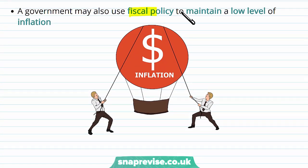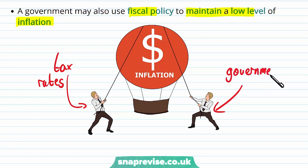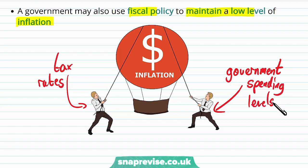The government may also use fiscal policy to maintain a low level of inflation. Suppose that inflation is starting to creep up — the government can increase tax rates, which means consumption will fall and therefore prices will fall because demand falls. Alternatively, the government might reduce their spending to reduce inflationary pressure on the price level. The UK has a target inflation rate of 2%, and while that responsibility is given to the Bank of England, the government can play a role in that too.